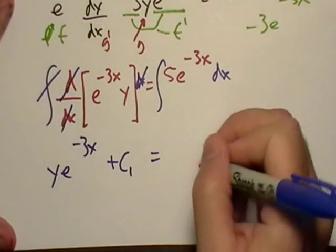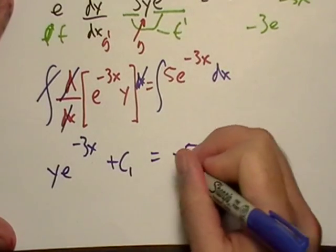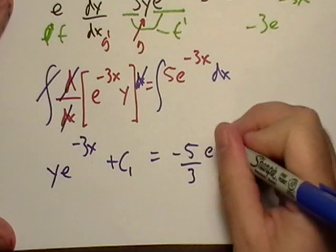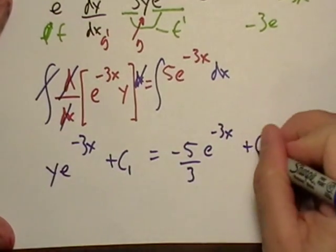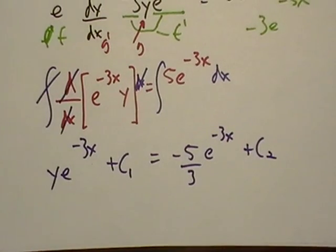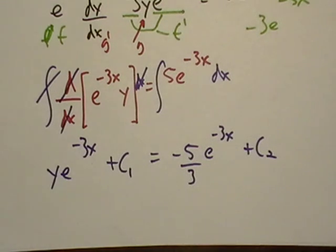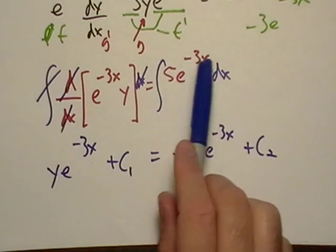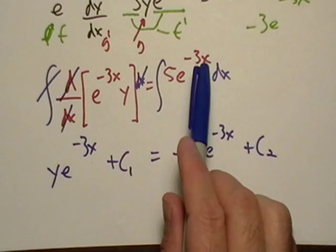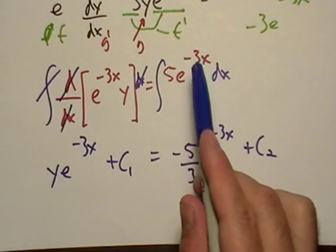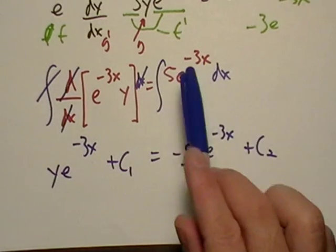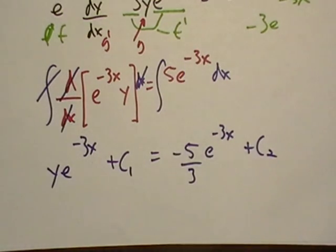This is just going to be negative five thirds. You have three x; we could almost do that in our head. It's just basically when integrating e and there's a function like this, you just use the reciprocal of the three. That's how you do that.